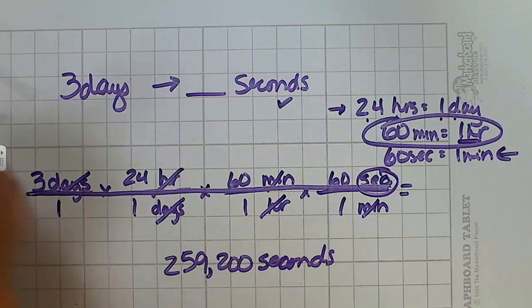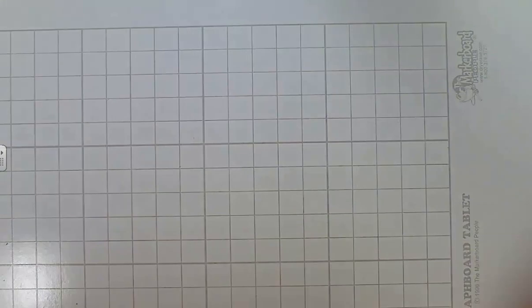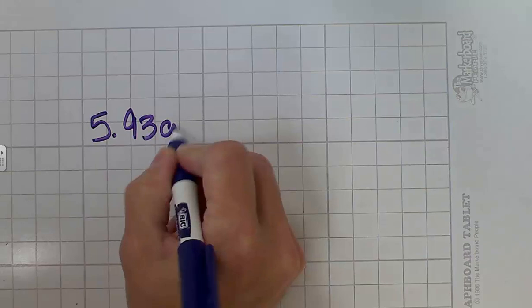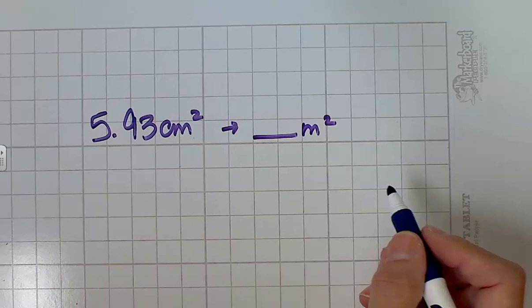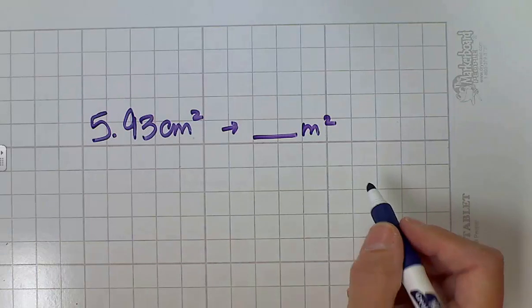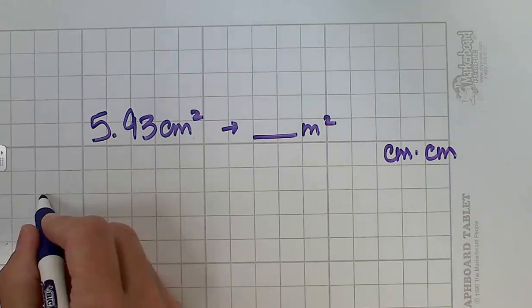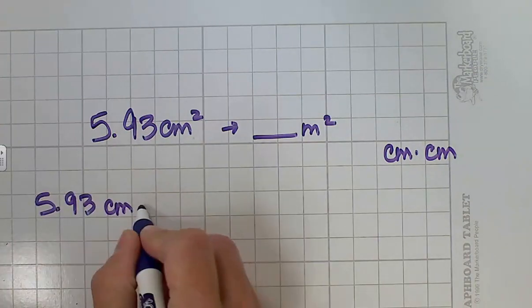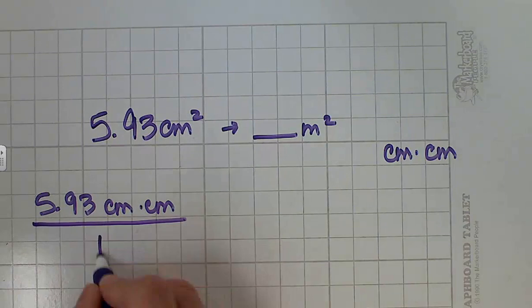5.93 centimeters squared, and we want to convert that to meters squared. So what does it mean when I say centimeters squared? It means centimeters times centimeters. And so when you do these problems, a lot of times it's easier to just write the word centimeter twice. Then you're not going to forget that you actually have to do the conversion twice. Again, this is over our invisible one.